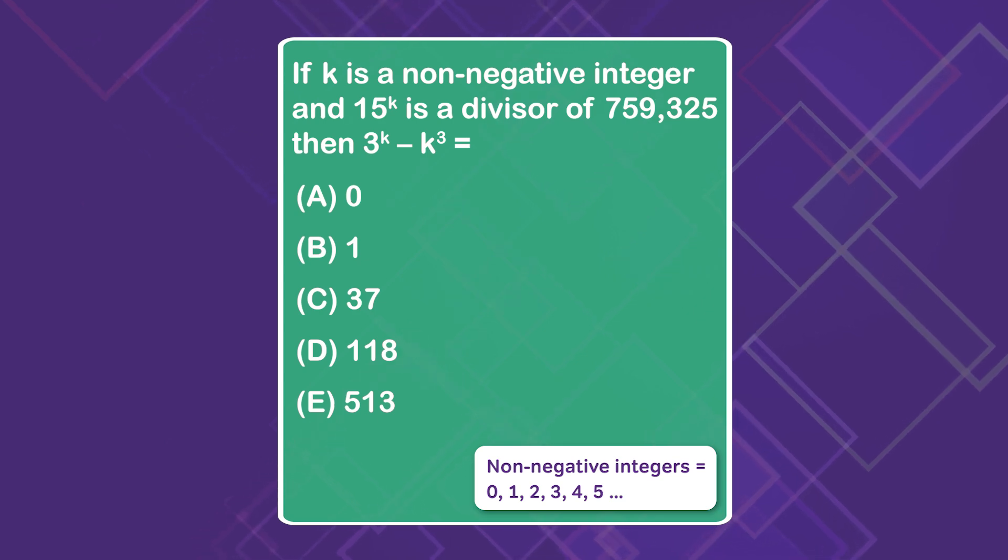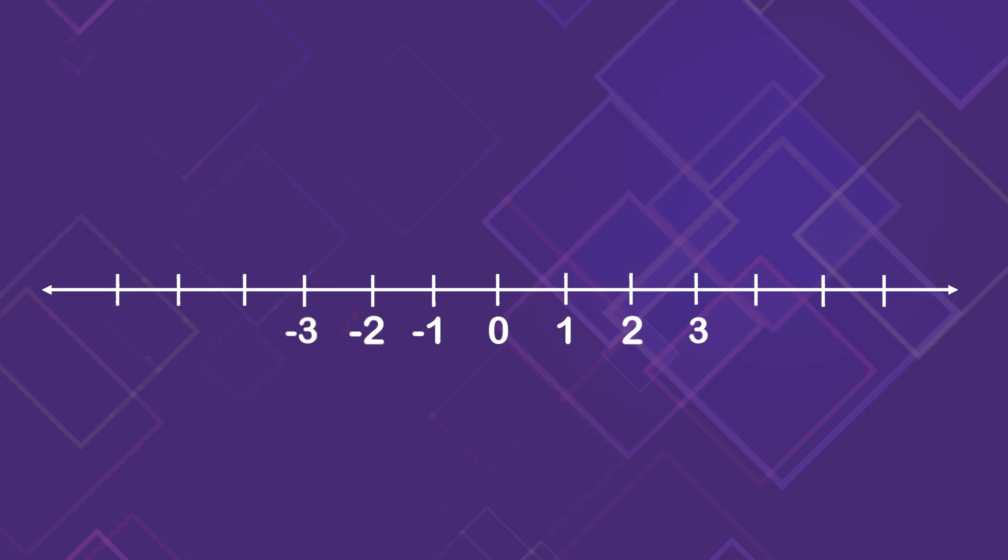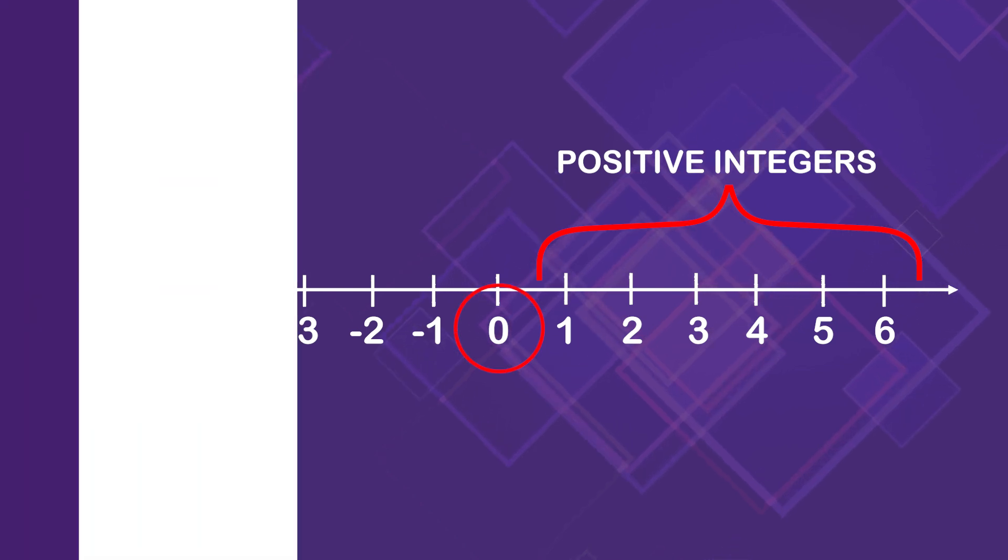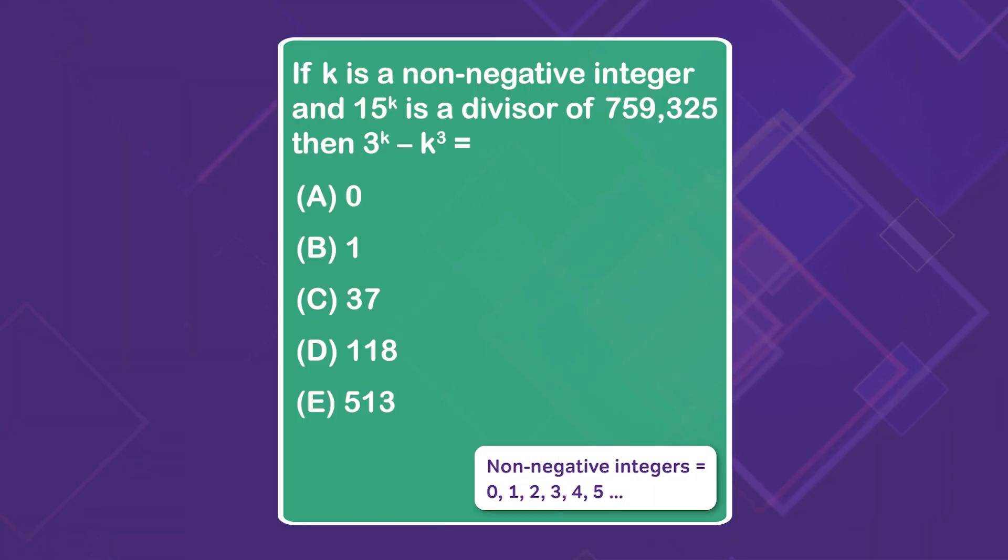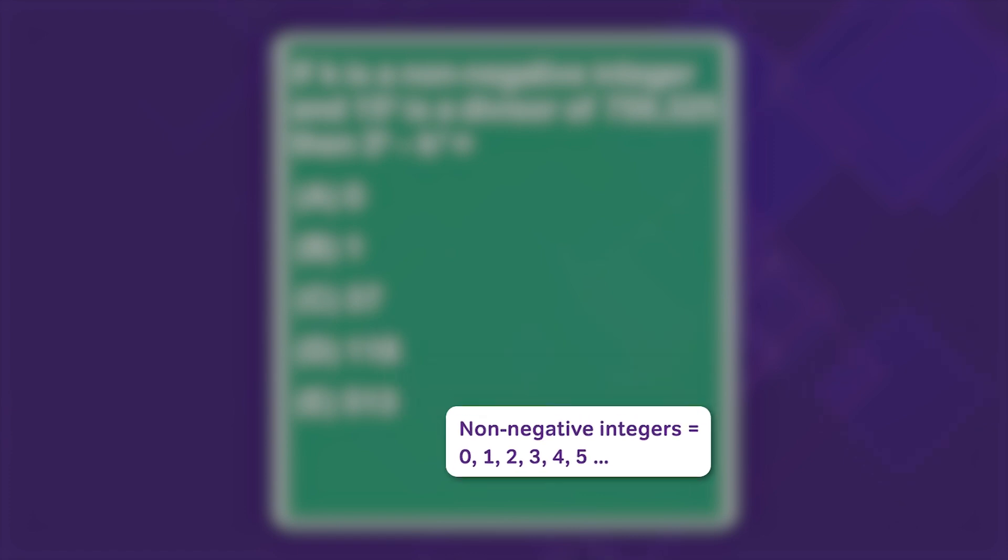First we want to focus on a vocab term here. We're told that k is a non-negative integer. Integers are whole numbers and non-negative means it could be any positive number or zero. Remember that the test chooses wording very carefully, so if it says non-negative that means we need to include zero and all of the positive integers on our list of options.